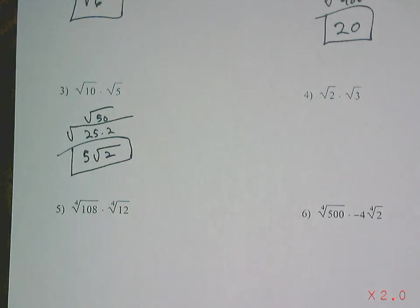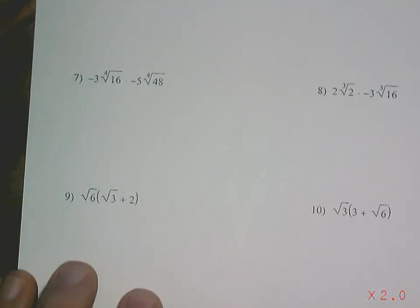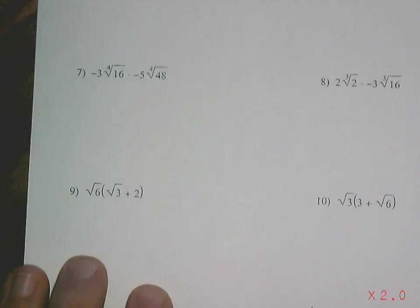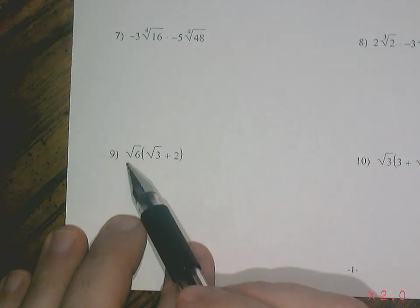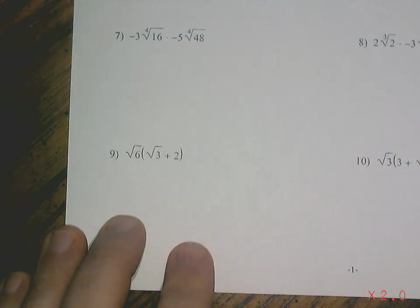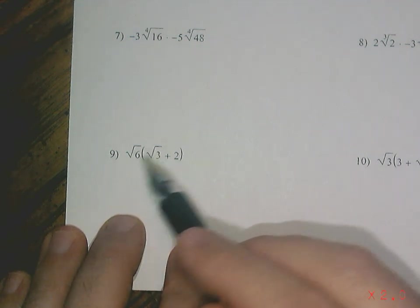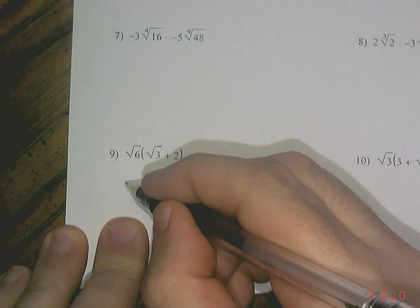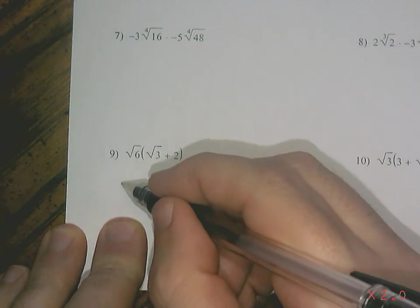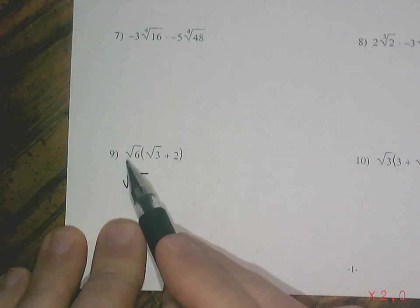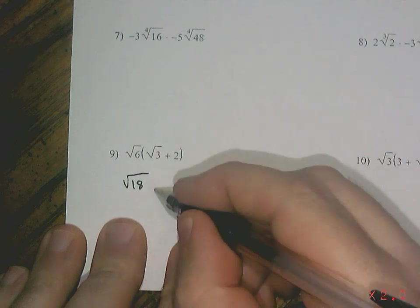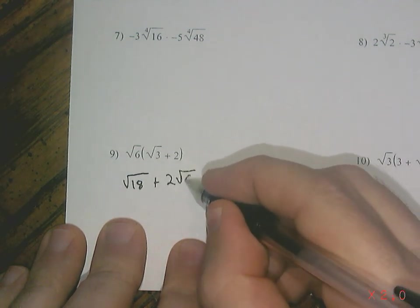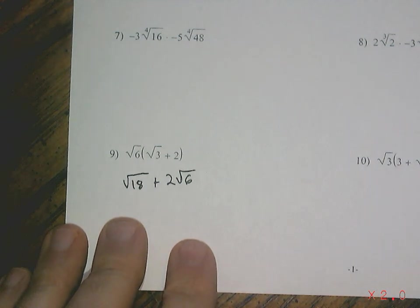Let's do one of these trickier problems. I've got square root of 6 being multiplied with both a square root of 3 and a 2. When I multiply the 6 and the 3, you're going to combine, so 6 times 3 is 18, right? So you got the square root of 18. But square root of 6 times 2, that just becomes a coefficient - it would just go in front because this isn't a square root. So it'll be plus 2 times the square root of 6.